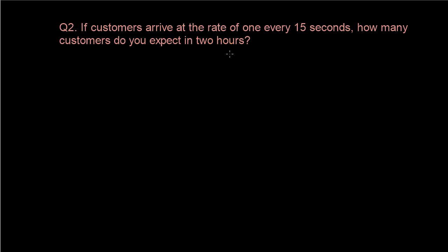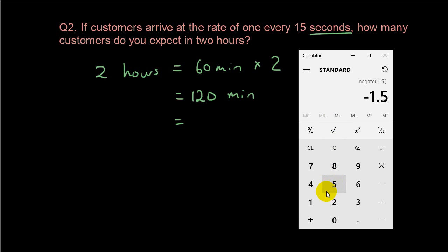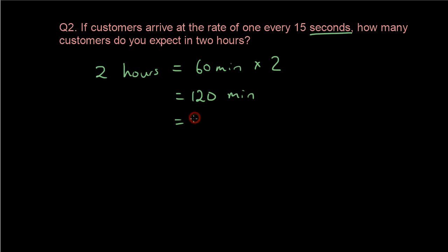Second question. If customers arrive at a rate of 1 every 15 seconds, how many customers do you expect in 2 hours? So 2 hours equals 60 minutes times 2, which equals 120 minutes. Because we're dealing with seconds, we've got to times that by 60, and that's 7200 seconds.